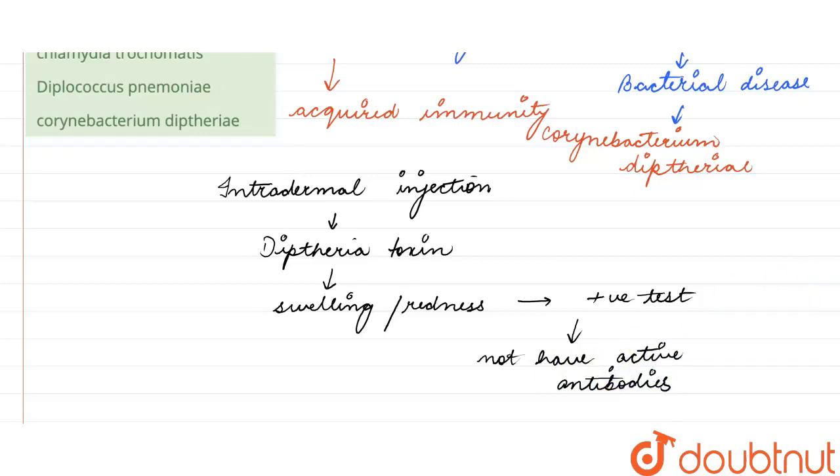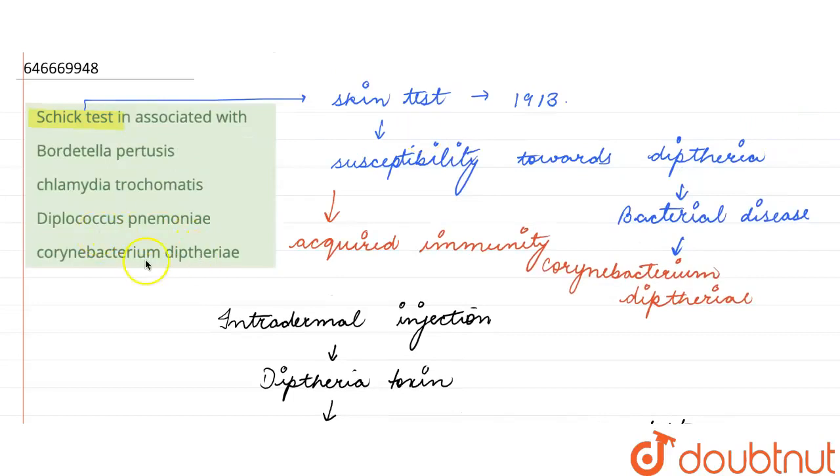So from the options given to us, the correct answer here will be option four, Corynebacterium diphtheriae. This is the bacteria that causes diphtheria, and Schick test is done to identify any acquired immunity or the susceptibility of the patient towards diphtheria. So option four is the correct answer. Thank you.